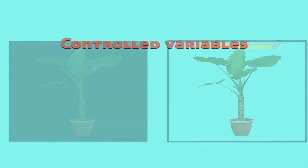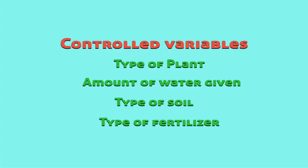For example, I would control the type of the plant, the amount of water that I gave it, the type of soil, and the type of fertilizer. Because if any of these variables are not the same for both plants, they're going to alter my outcome. So by controlling them, I know whatever my outcome is, whichever plant's going to grow taller, I know it had to do with only whether it was in the light or not. So those are controlled variables.